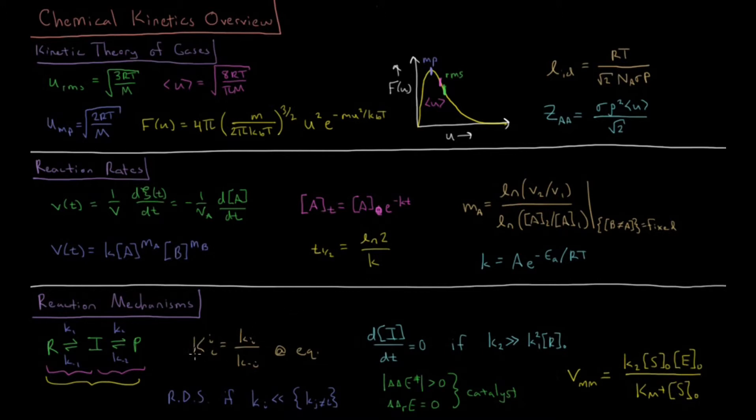Detailed balance says that the equilibrium constant for every elementary step along the way at equilibrium is equal to its forward rate constant divided by its reverse rate constant. And that's true for all elementary steps when you're at equilibrium. That's the principle of detailed balance.